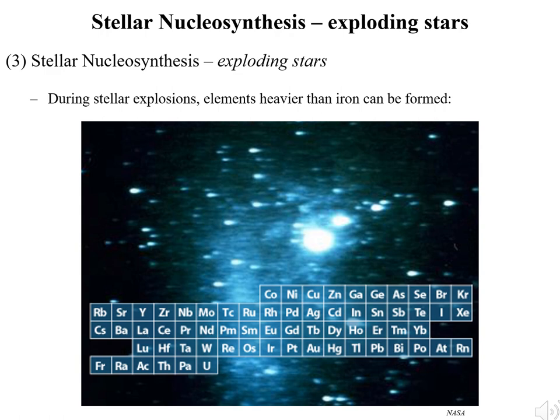These explosions produce the conditions needed to form the elements heavier than iron. This illustration shows the elements heavier than iron which can be formed during stellar explosions. These elements are found in many objects throughout our solar system, and our Earth is in part made out of the remnants of ancient exploded stars.